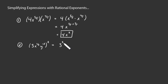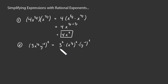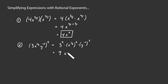So we have 3 to the second power, times x to the 1 third also to the second power, and then y to the negative 2 also to the second power. We've made this a bit nicer. 3 squared is immediately 9. When you have a power raised to another power, we multiply the exponents — so 1 third times 2 is 2 thirds. Likewise, y to the negative 2 raised to the 2 gives y to the negative 4th power.